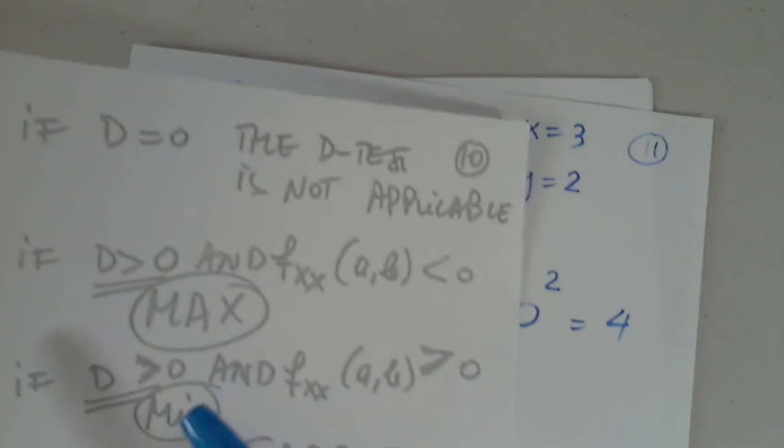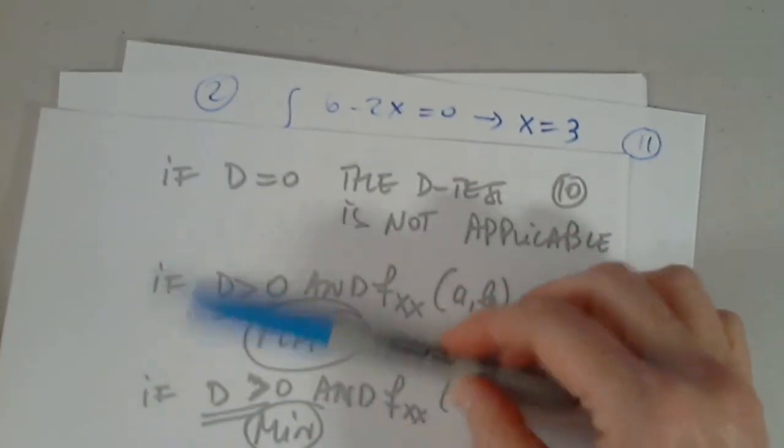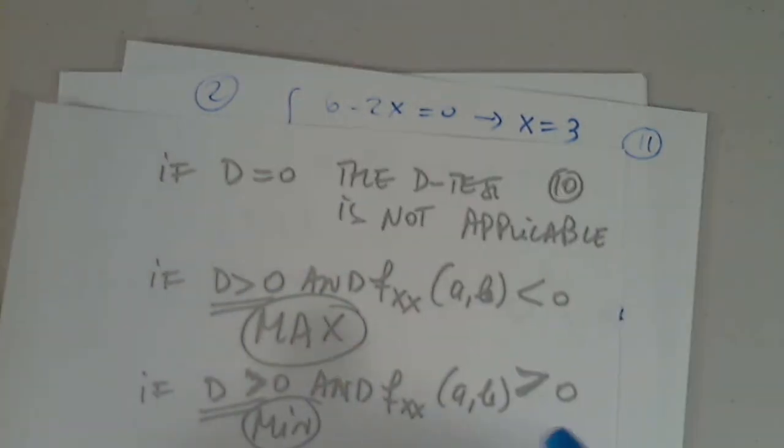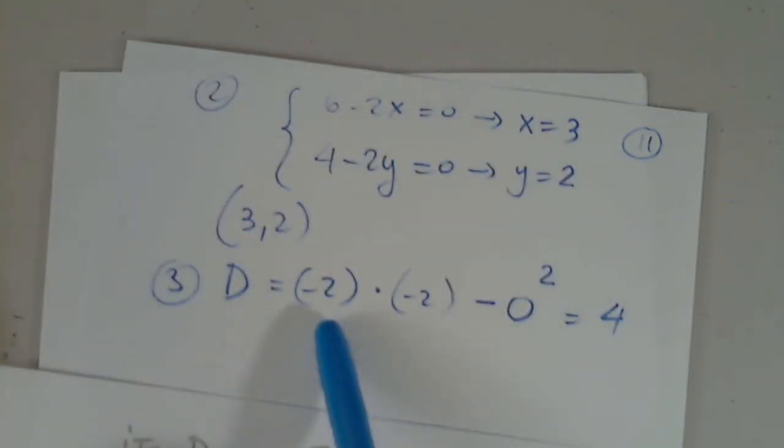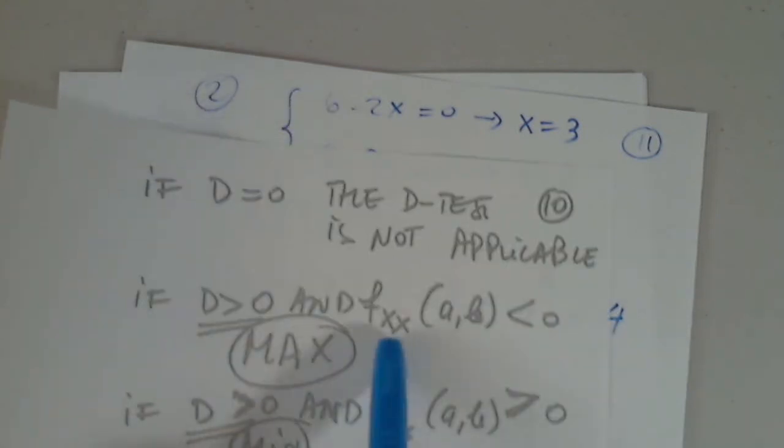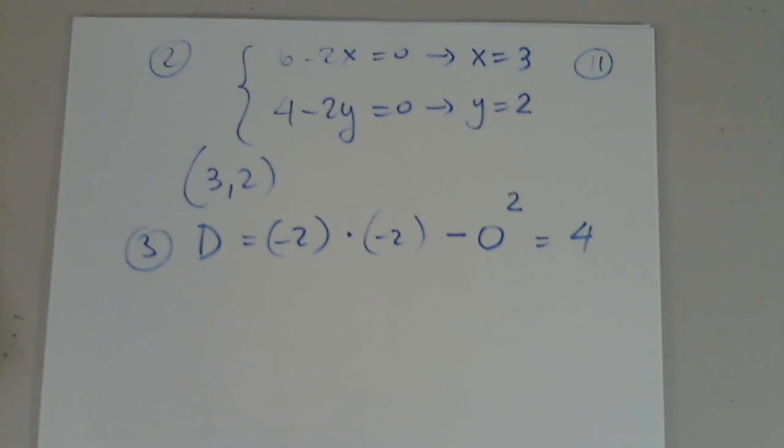Is d greater than 0? No. Is d less than 0? No. So I'm here now. So d is a positive number. All I have to do before I conclude what type of point this is, is look at fxx. But fxx is negative 2. So it's the first situation with d positive and fxx negative. So this is a maximum.